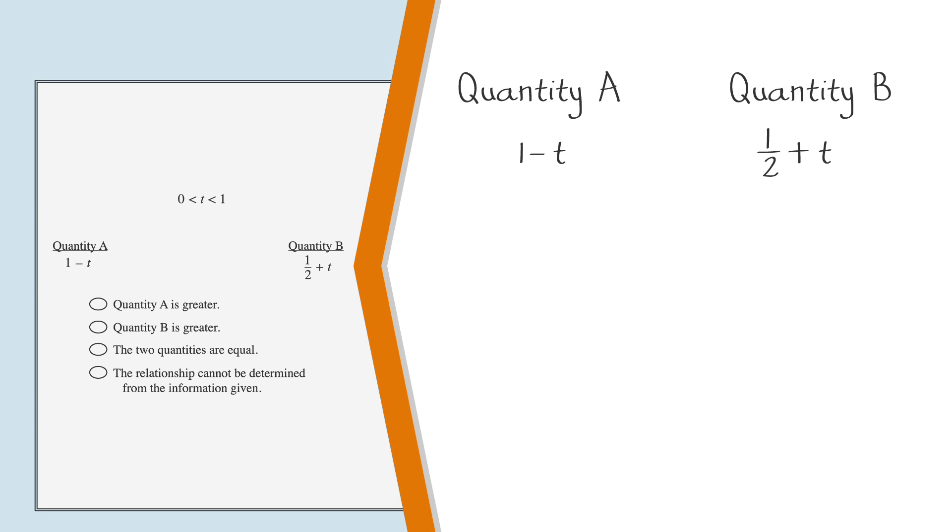Now let's try to plug in t as 1 tenth, a number that's on the other end of the spectrum, closer to 0. Solving for this value, we see that quantity A is larger.